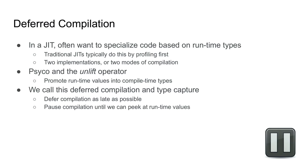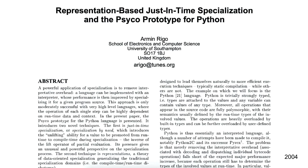Instead of a traditional profiling run followed by an optimizing JIT pass, YJIT implements deferred compilation and type capture. We use stubs to defer compilation as late as possible and then peek at runtime values inside the compiler. This idea was first covered in a paper by Armin Rigo about the Psyco prototype JIT for Python.